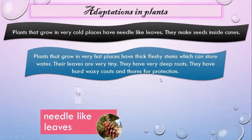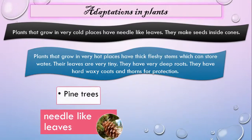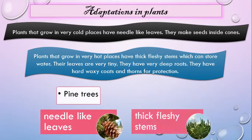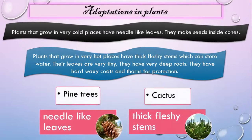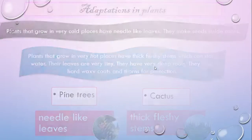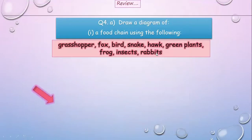So pine trees have needle-like leaves, and cactus grows in deserts with thick, fleshy stems. Now we are reviewing Unit Number Four.